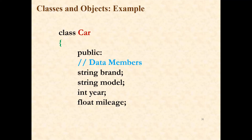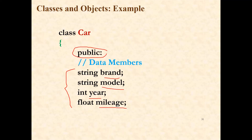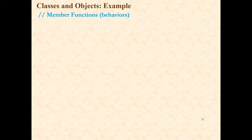Outside the class, other class members cannot access that private variable. Only public variables can be accessed throughout the program. So here, under the public access method, there are four variables defined: two are string variables — brand and model. We have already discussed string variable declaration in our previous video. And here, an integer variable is declared — that is the year — and a float variable is declared — that is the mileage. So these four data members are under the public access specifier.